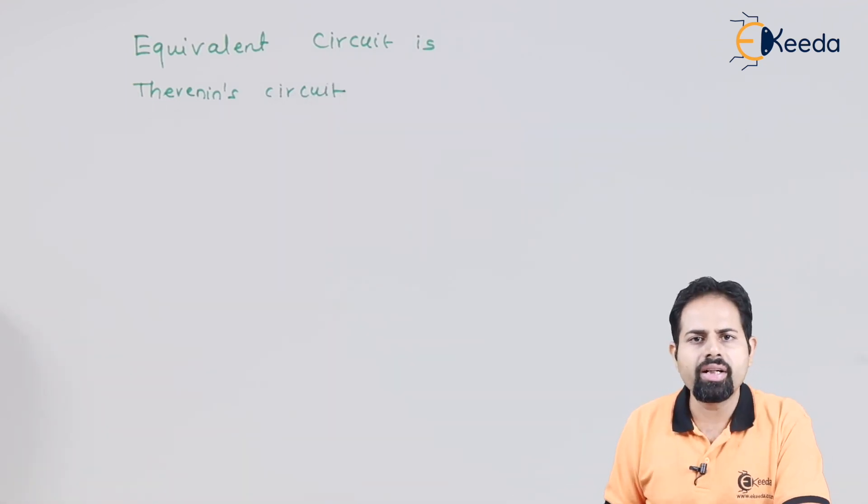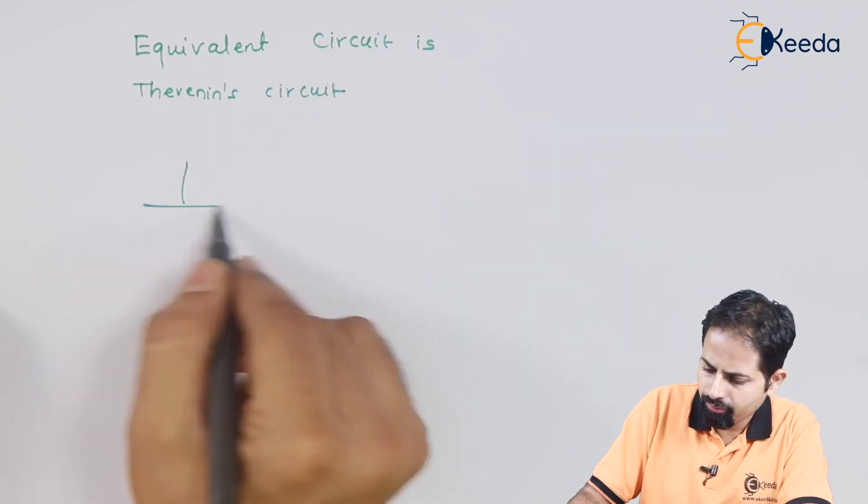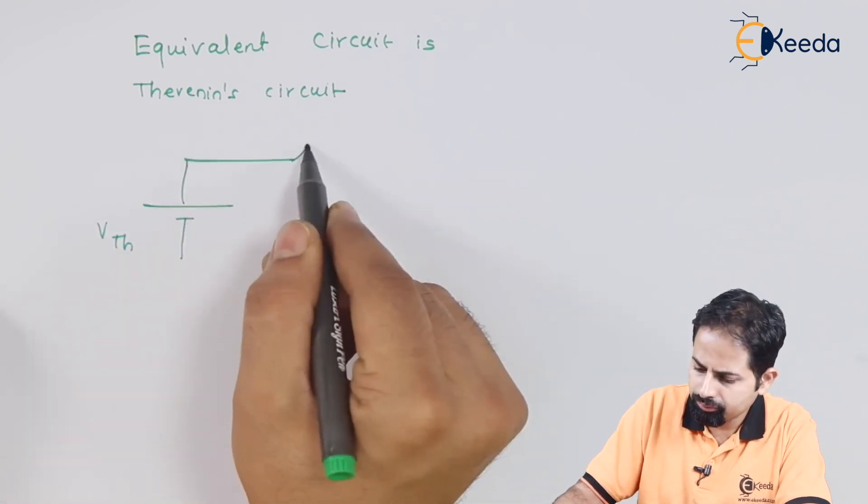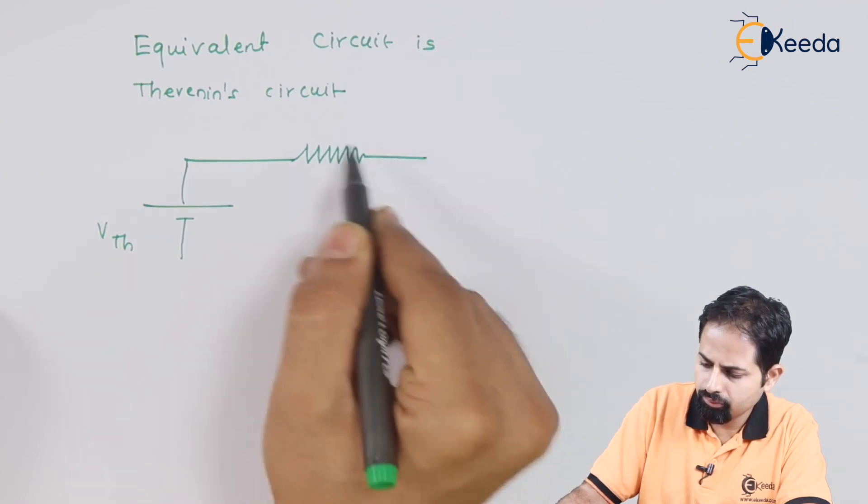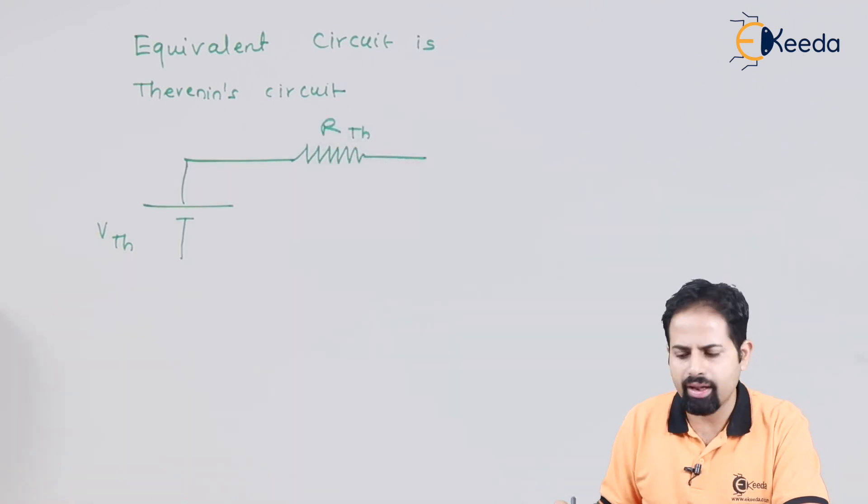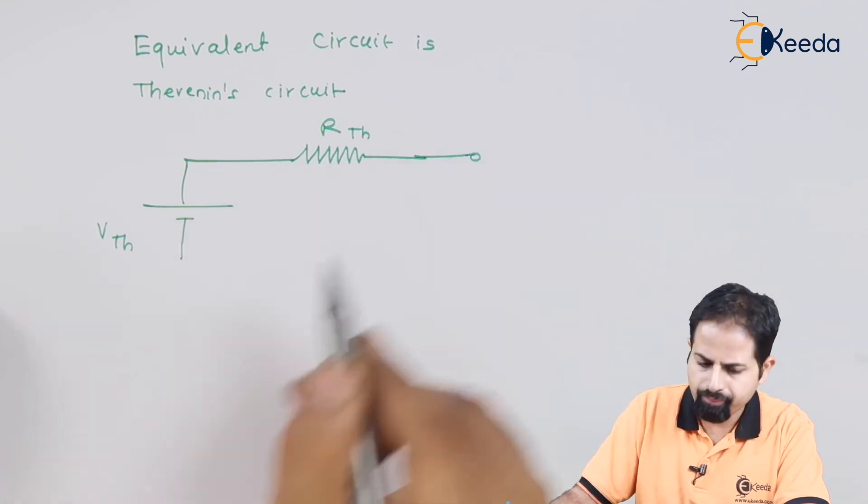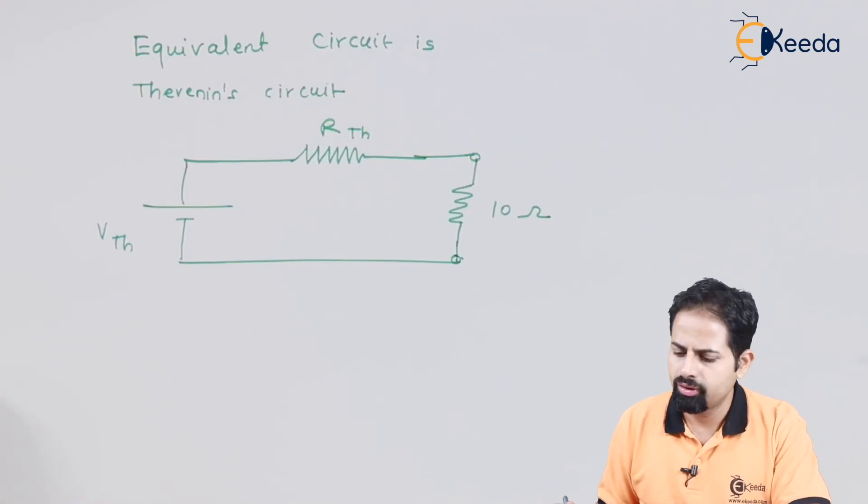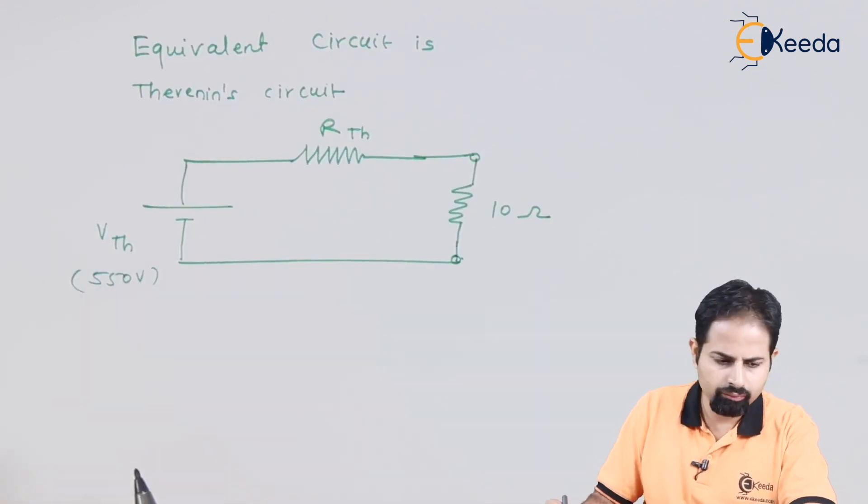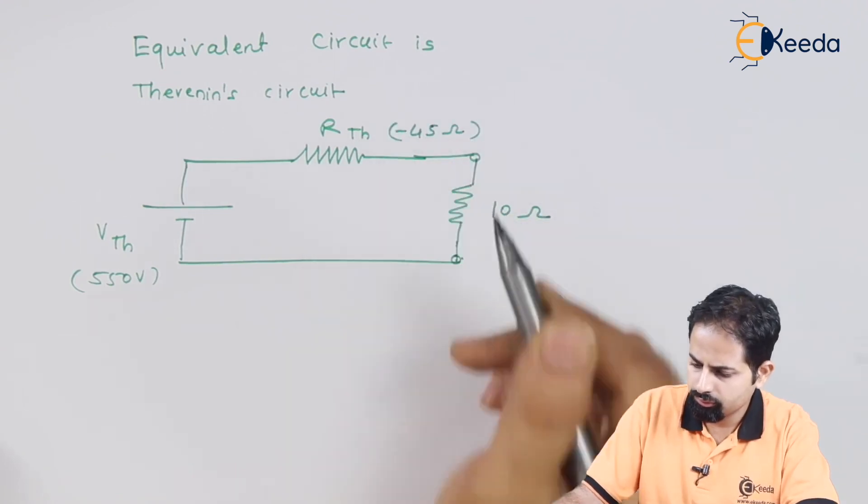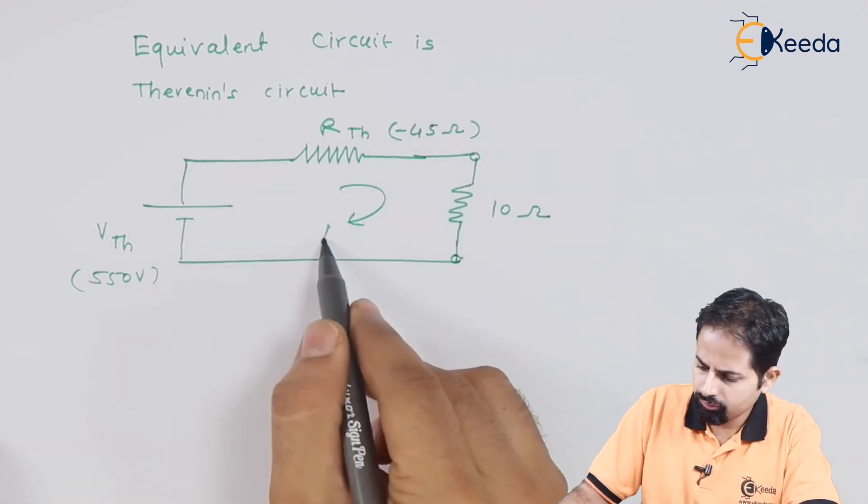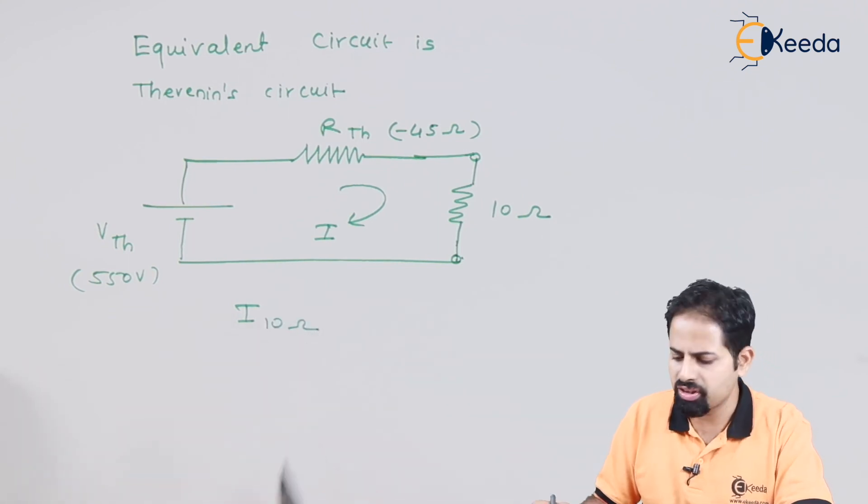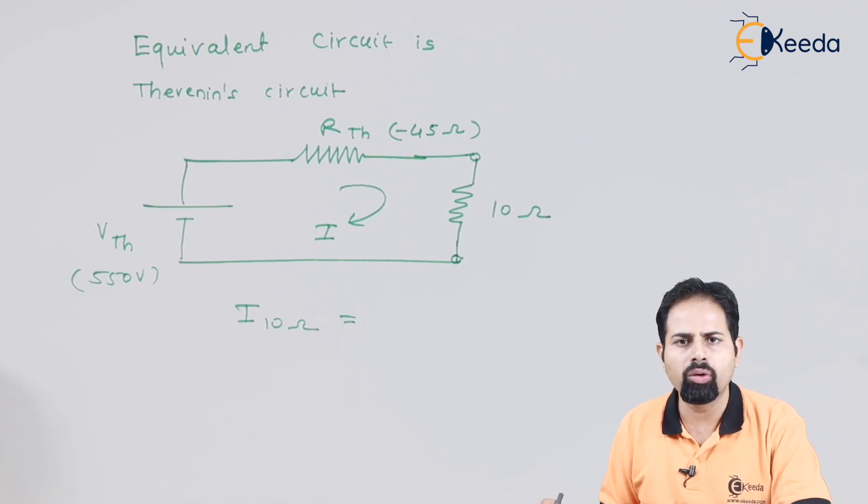So equivalent circuit is Thevenin's circuit is Vth in series with Rth. And this particular resistance across which current is to be found. So let us substitute the values.